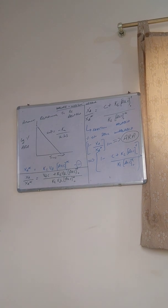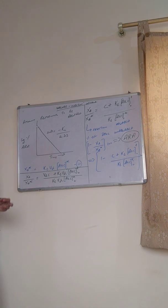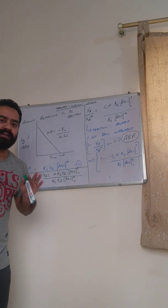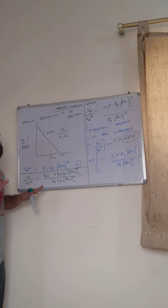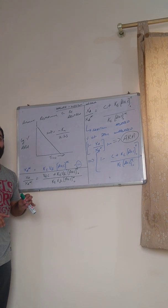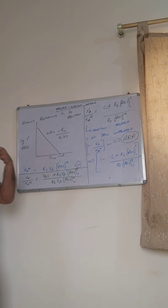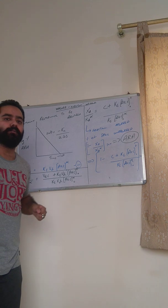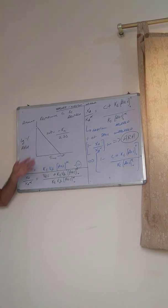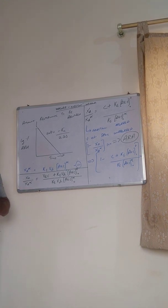To summarize the Wagner-Nelson method: we determine the fraction XA upon XA infinity, which is the fraction of drug absorbed. To determine the fraction unabsorbed, we subtract this from 1, multiply by 100, and get the ARA — amount remaining to be absorbed. This method is easier compared to the curve fitting method and gives more accurate results. One disadvantage is that this method can only be used if the drug follows a one-compartment model, not in the case of two-compartment or multi-compartment models. Please go through this derivation again, and feel free to contact me if you have any doubts. Thank you.